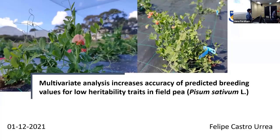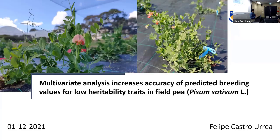Good day everybody. As Phil mentioned, I'm going to tell you about how we're using multivariate analysis to increase the accuracy of prediction of breeding values for traits with low heritability. I'm doing this on field peas, but we can apply this to any self-pollinating crop.